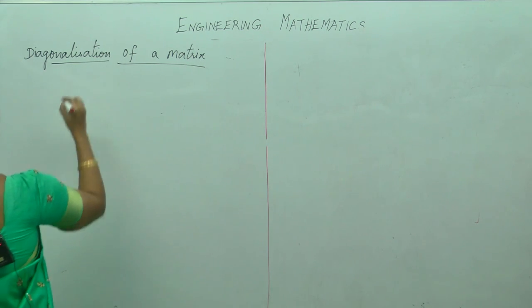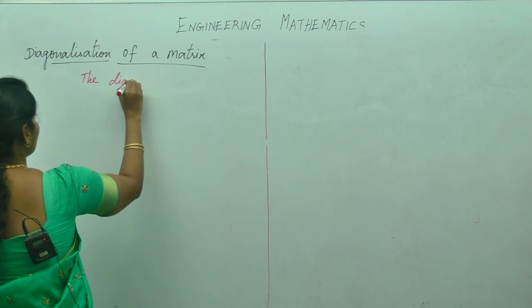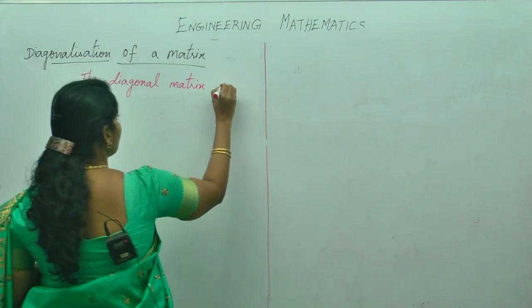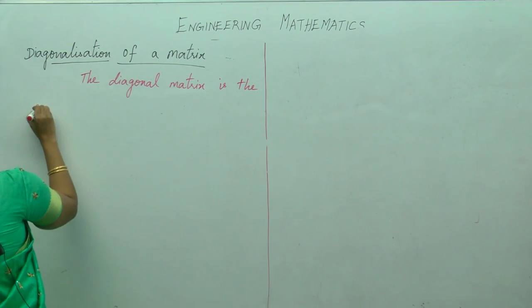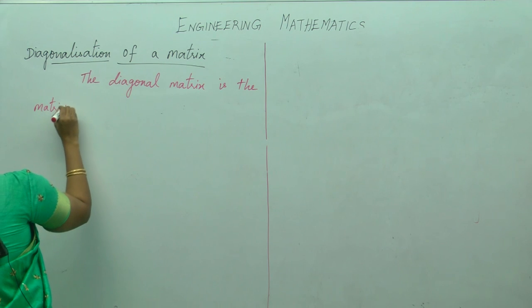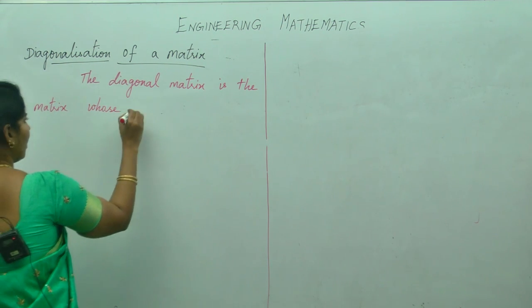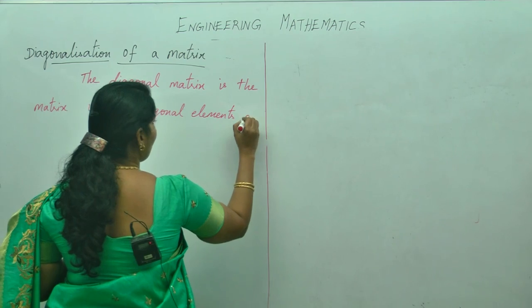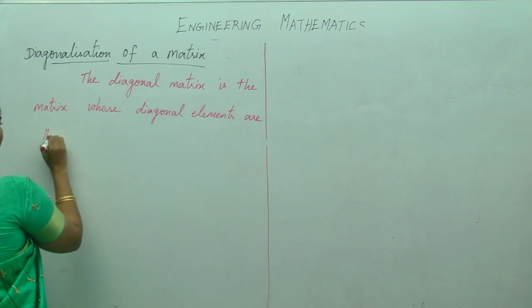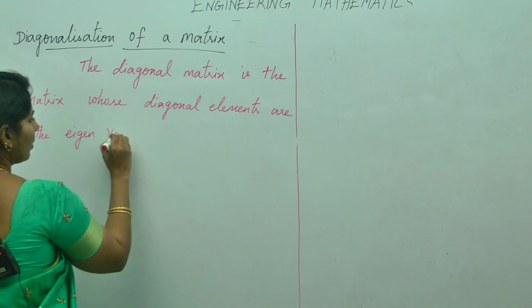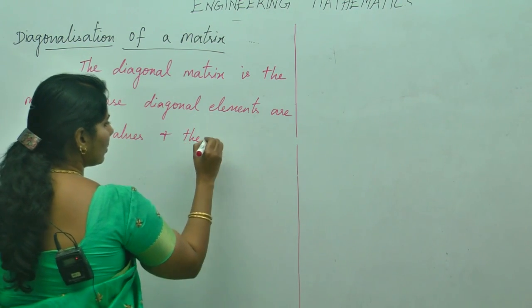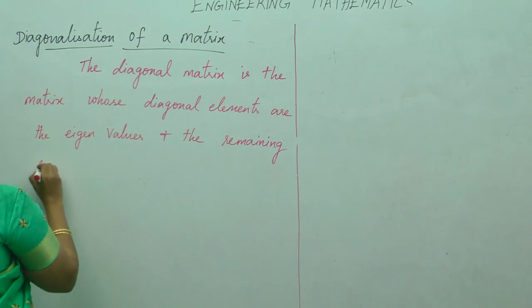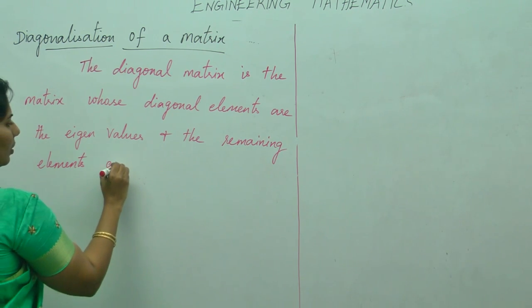The diagonal matrix is the matrix whose diagonal elements are the eigenvalues and the remaining elements are all 0s.